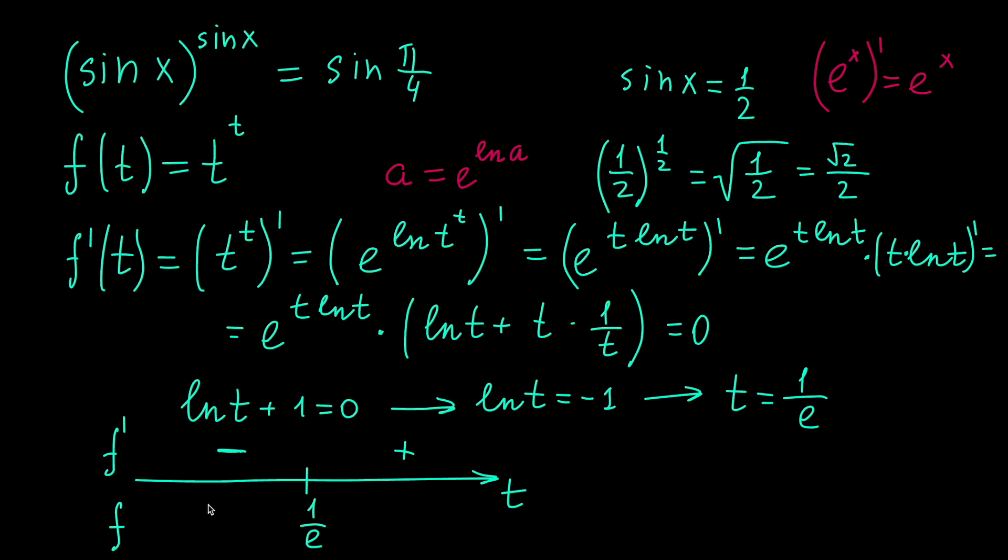And now as we have the sign diagram of the derivative, we can state that the function decreases on this interval and increases on this interval. So our original equation doesn't have more than one solution on this interval, as well as on this interval. We already know a solution sin x equals 1 half, and 1 half is more than 1 over e. So we know the solution from this interval. Now we have to find the solution here.